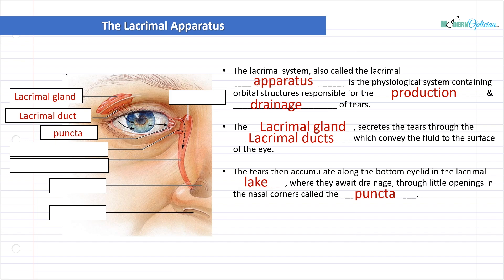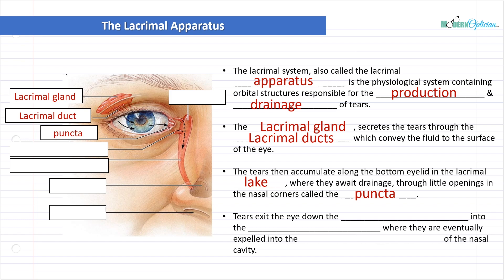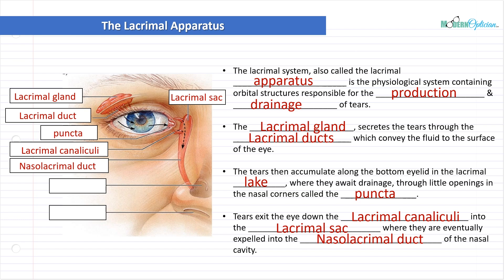The lacrimal gland produces the tears, which flow through the eye and with gravity move down, accumulating at the bottom - we call that the lacrimal lake. Tears exit the eye down the lacrimal canaliculi, a little tube going from the punctum into the lacrimal sac, where they eventually expel into the nasolacrimal duct - the main tube going down. They end up in the nasal cavity and through the nostril.